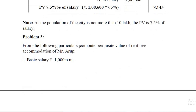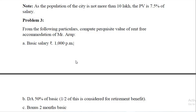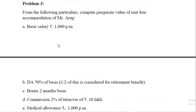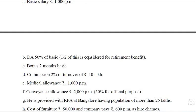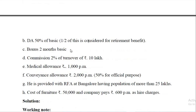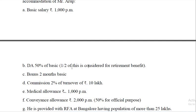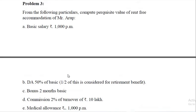We will move on to the third problem: compute the perquisite value of rent-free accommodation of Mr. Anu. Basic salary is ₹10,000 per month, so ₹10,000 into 12 = ₹1,20,000. DA is 50% of basic = ₹60,000, but only 50% of DA enters retirement benefits, so ₹30,000 is part of salary for rent-free accommodation computation. Bonus is 2 months' basic = ₹20,000.